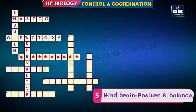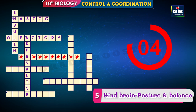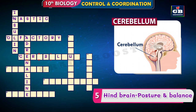Five across — hint: brain, posture and balance. These are the two hints. The answer is cerebellum. Cerebellum is the part of the hind brain that is responsible for maintaining posture, temperature, and balance of the body.